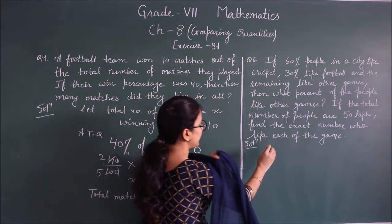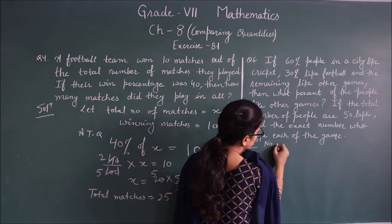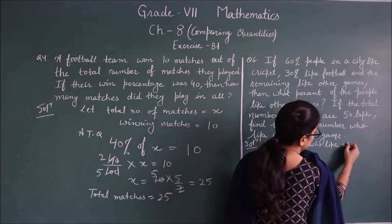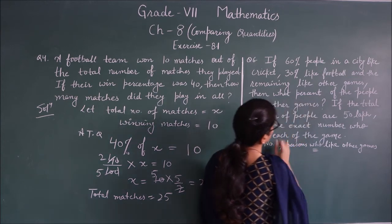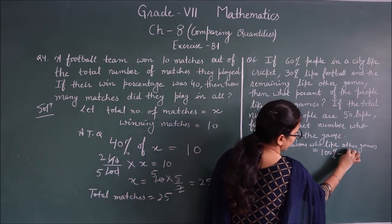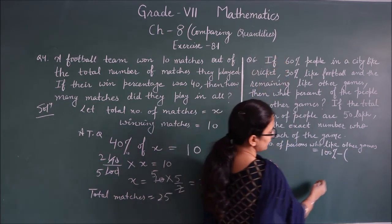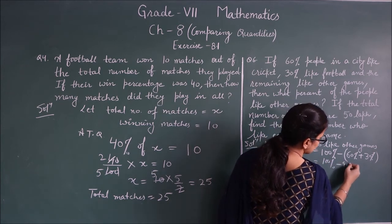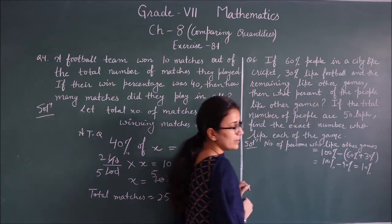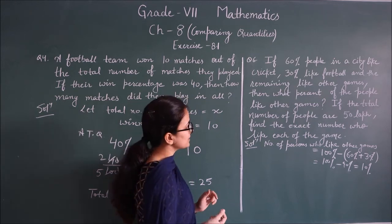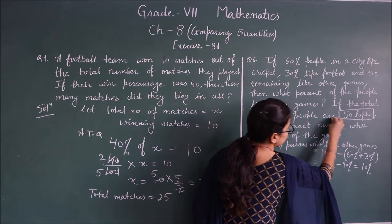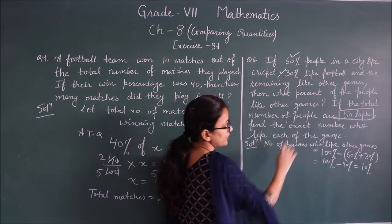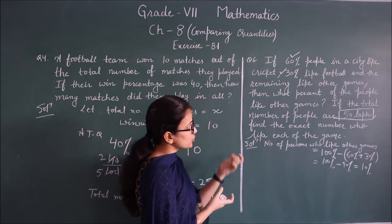First, percentage who like other games = 100% − 60% − 30% = 10%. Now, number of persons who like cricket = 60% of 50 lakh = 60/100 × 50 lakh = 30 lakh. Number who like football = 30% of 50 lakh = 30/100 × 50 lakh = 15 lakh.